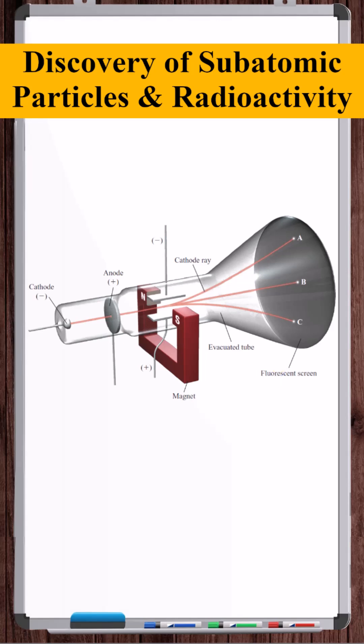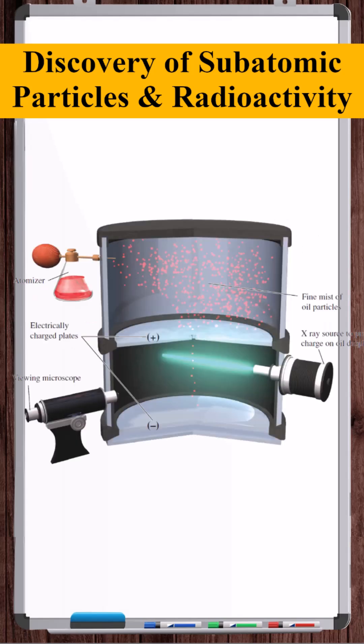English physicist J.J. Thompson was able to calculate the charge-to-mass ratio of the electron. Soon after, R.A. Millikan, in the Millikan oil drop experiment, calculated the charge on the electron.